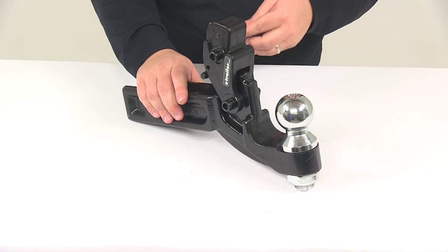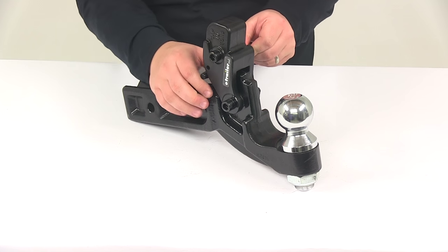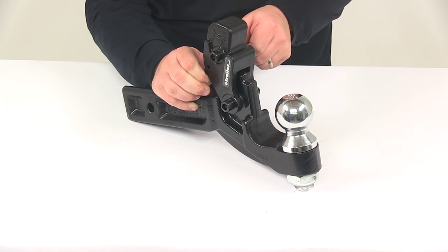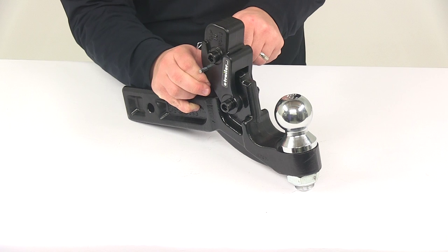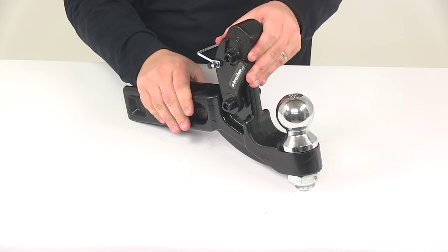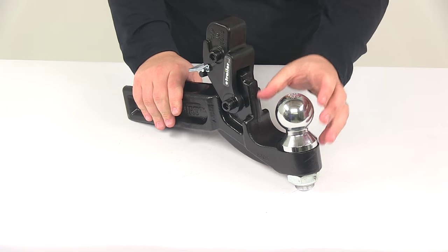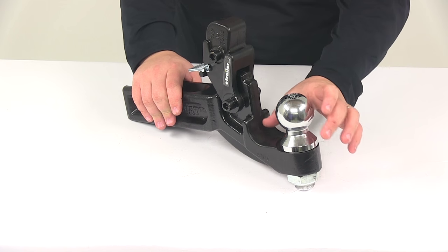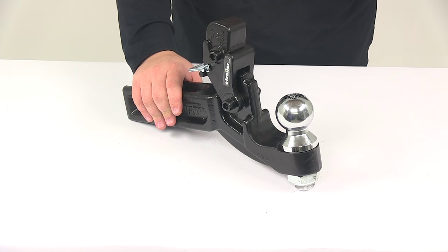It's going to snap into position. At this point, to keep it in the open position, you can reinstall the pin. That way you can use this with your standard ball coupler, and you can connect your lunette ring if you want to use it for a lunette ring coupler.